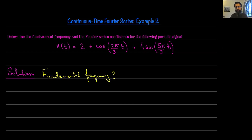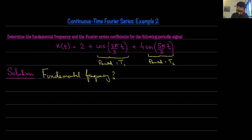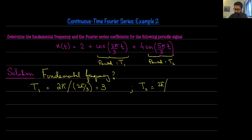In order to do that, let me find the fundamental period for each component of the signal. Let t1 be the fundamental period of the first component and t2 for the second. T1 is 2π divided by the frequency, which is 2π/3, so t1 equals 3 seconds. Similarly, t2 is 2π divided by 5π/3, which gives t2 equal to 6/5 seconds.